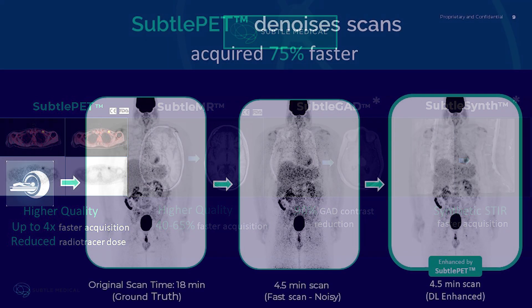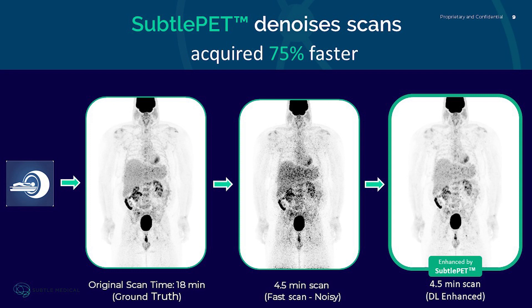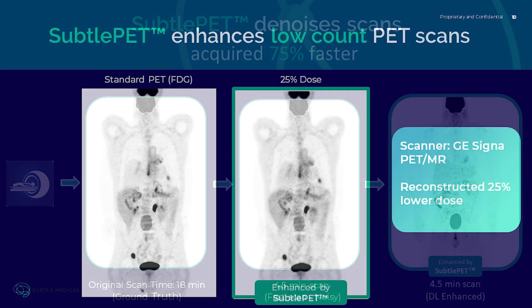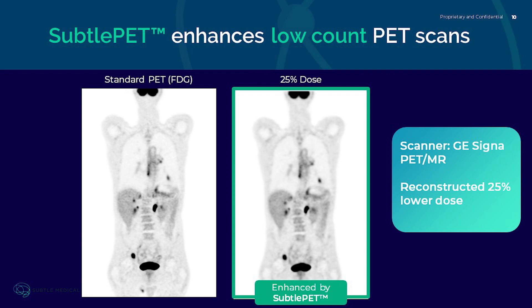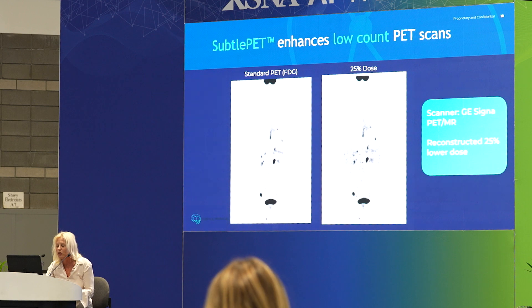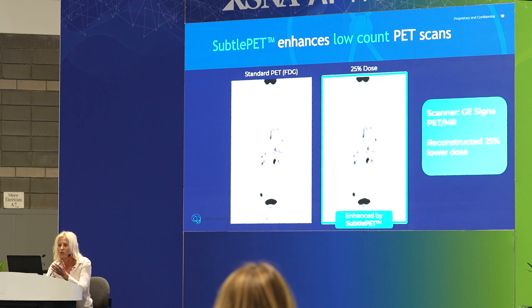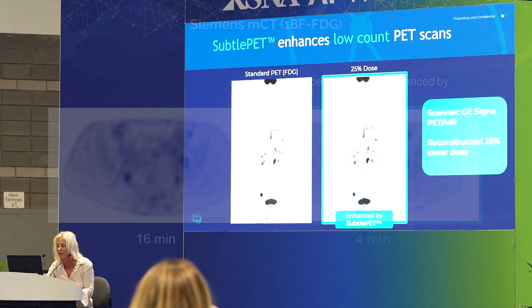Subtle PET denoises scans that are acquired 75 percent faster. Here's the original scan that took 18 minutes — if you alter your protocol and go faster you can get that down to four and a half minutes, but the images are quite noisy. You can then enhance that fast noisy image with Subtle PET, and that deep learning really provides a big boost in the signal to noise ratio. Subtle PET also enhances low count PET scans — we call it a low count scan if you reduce the radiotracer dose or acquire images faster. Looking at this 25 percent reduced dose image on the right hand side, if you enhance that with Subtle PET, that noisy image is transformed into higher image quality.